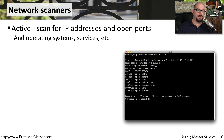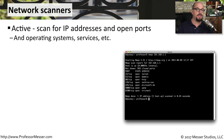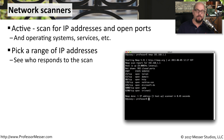A network scanner is commonly used to determine what services might be running on a remote device. You can find out if a server is running web services, FTP services, IRC services, or any other type of service. These network scanners can also determine what operating system might be running on a remote device. You would commonly tell a network scanner to scan an individual IP address or an entire range, and it will report back whatever it finds on the network.